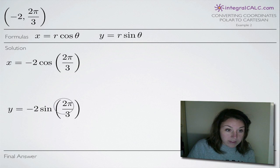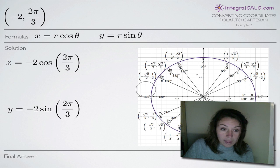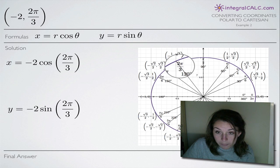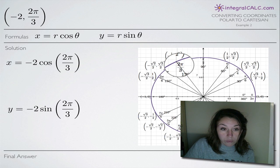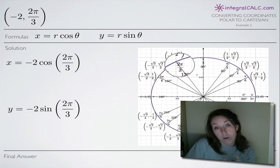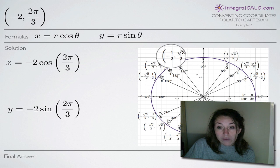We need to use our unit circle to evaluate cosine of 2pi over 3 and sine of 2pi over 3. We look for the point at which the angle theta equals 2pi over 3. On the unit circle at 2pi over 3, cosine of 2pi over 3 gives us the x coordinate, which is negative 1/2, and sine of 2pi over 3 gives us the y coordinate.